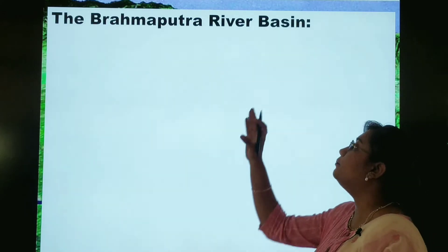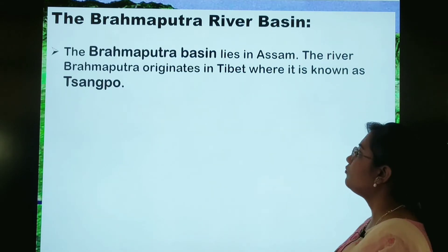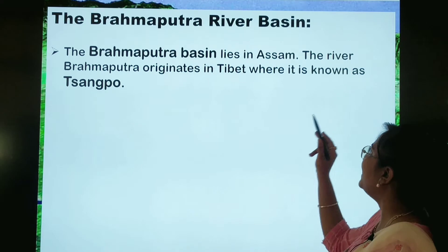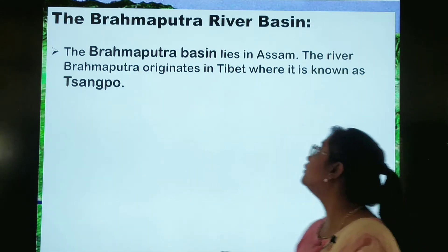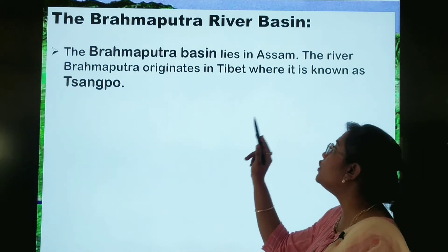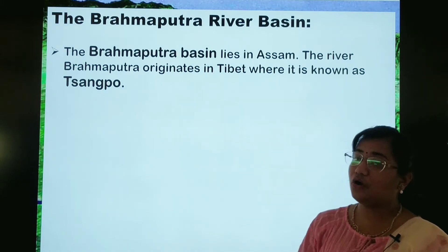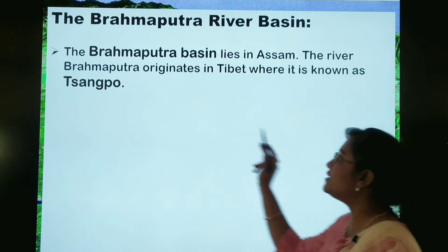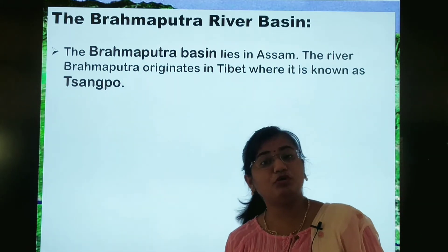Here is the Brahmaputra river basin. The Brahmaputra basin lies in Assam. The river Brahmaputra originates in Tibet, where it is known as Sampo — yeh Tibet se originate hoti hai aur yahaan par isse Sampo bola jata hai.